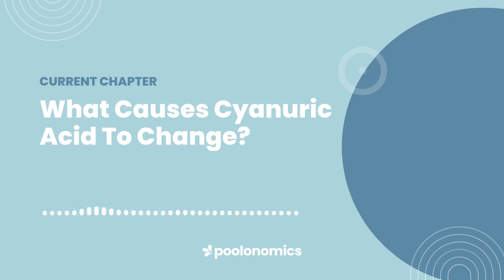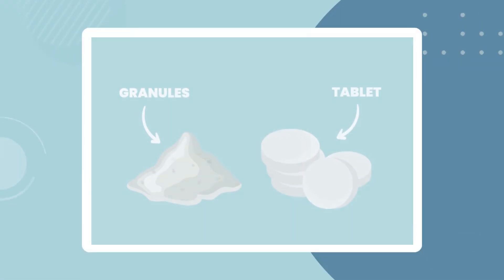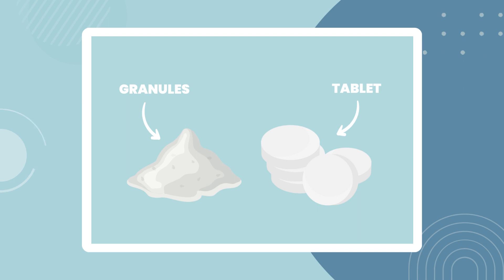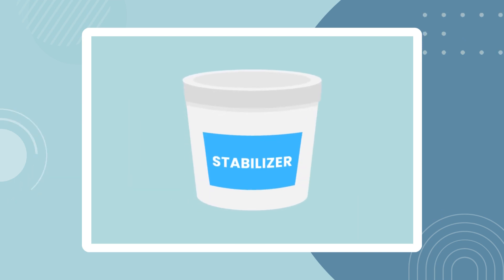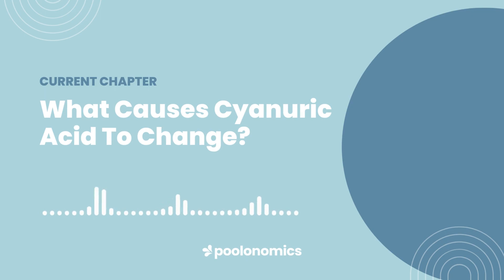What causes CYA to change? Cyanuric acid doesn't tend to fluctuate much and is relatively easy to manage, but it's not entirely immune to change. The biggest cause of rising cyanuric acid in a pool is simply adding more of it to the water. Many pool owners introduce stabiliser to their water without realising it, especially since most granular and tablet forms of chlorine contain more cyanuric acid than they do chlorine. They may even be using products that aren't clearly labelled as CYA, such as pool stabilisers or conditioners. Cyanuric acid also doesn't evaporate along with your water, so it gets left behind and becomes more concentrated over time.